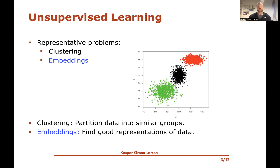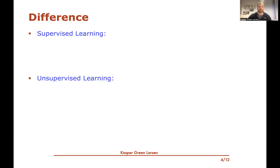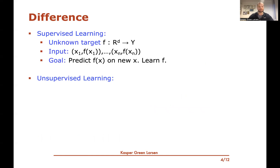Let's get into more detail about what a good representation could be, and highlight the key difference between supervised and unsupervised learning. In supervised learning, there is an unknown target function mapping our feature vectors — d-dimensional vectors — into an output domain of labels. The input consists of training examples where we see evaluations of this unknown target function on different feature vectors, and the goal is to predict this evaluation on a new element where we only see the features.